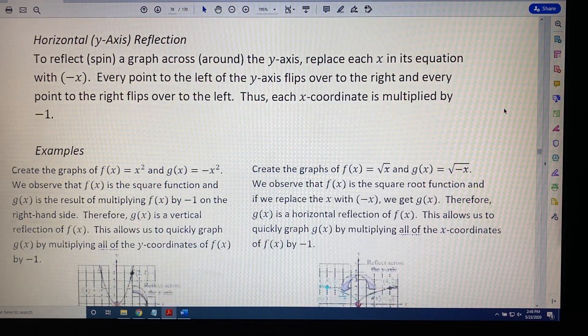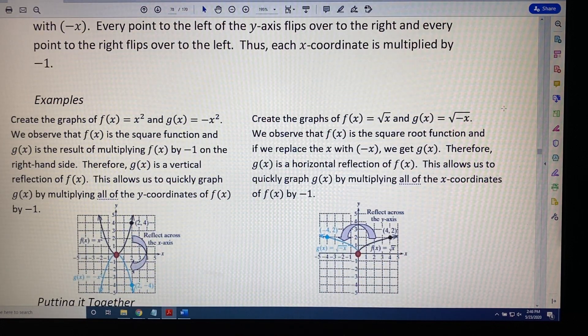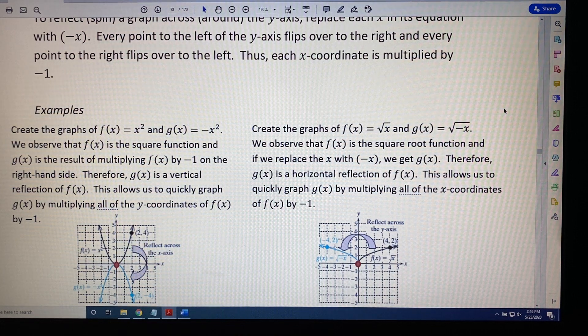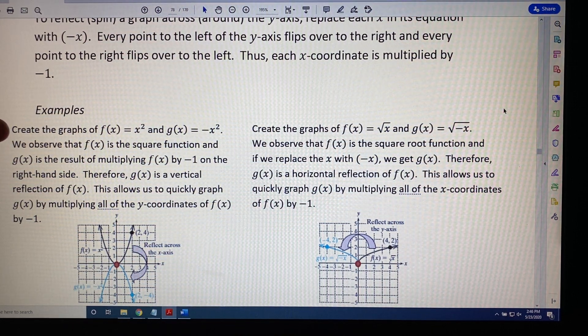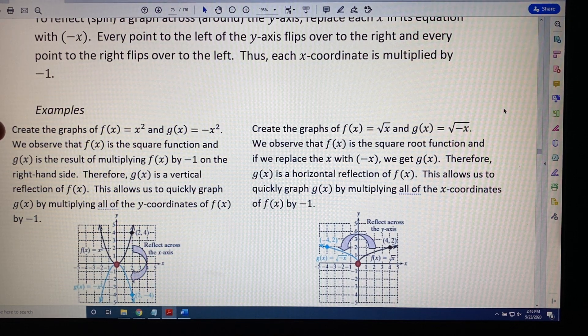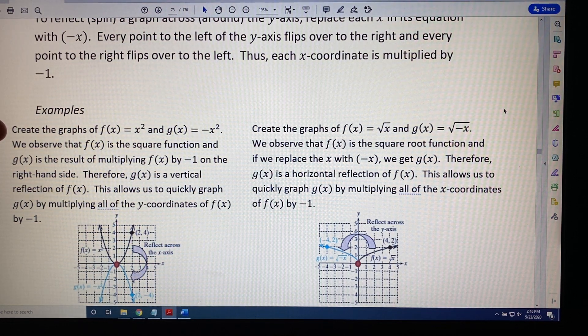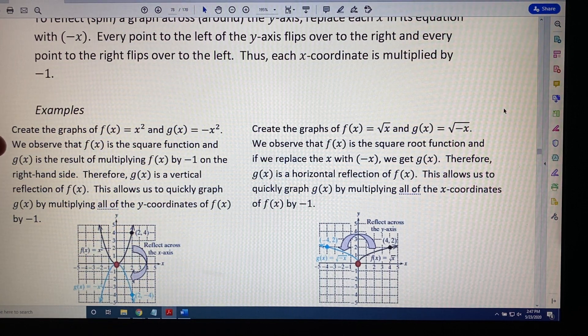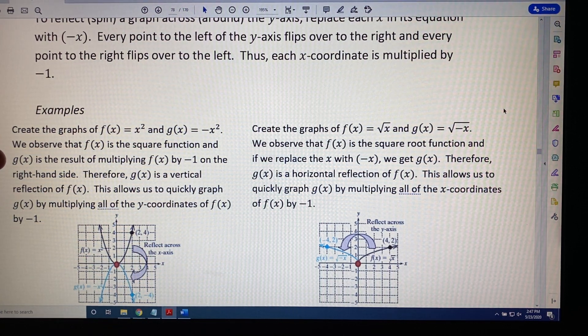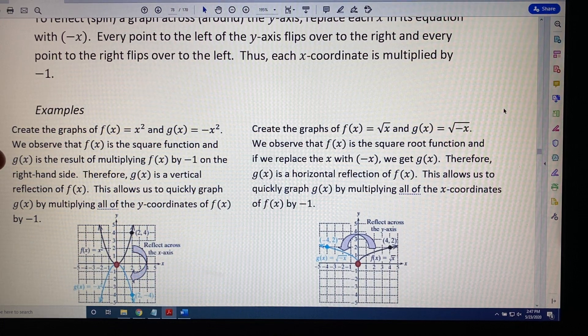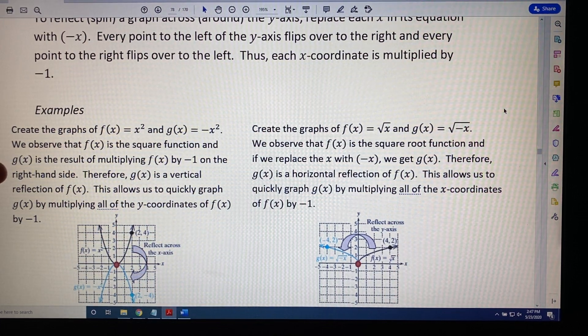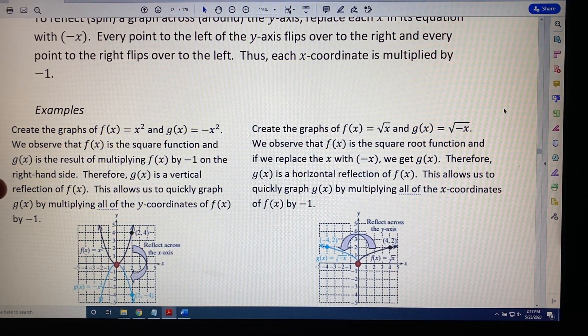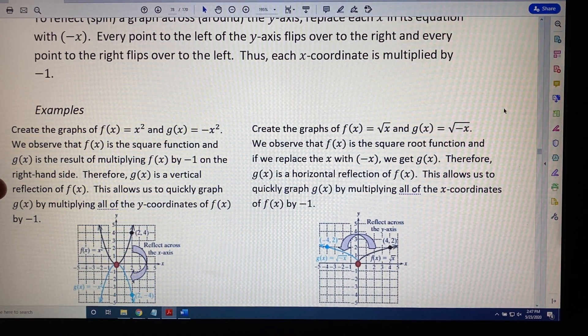Let's look at two examples. Create the graphs of f(x) = x² and g(x) = -x². We observe that f(x) is the square function, and g(x) is the result of multiplying f(x) by negative one on the right-hand side. Therefore, g(x) is a vertical reflection of f(x).